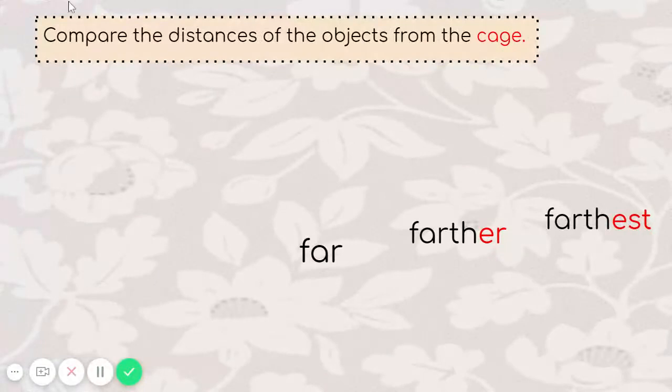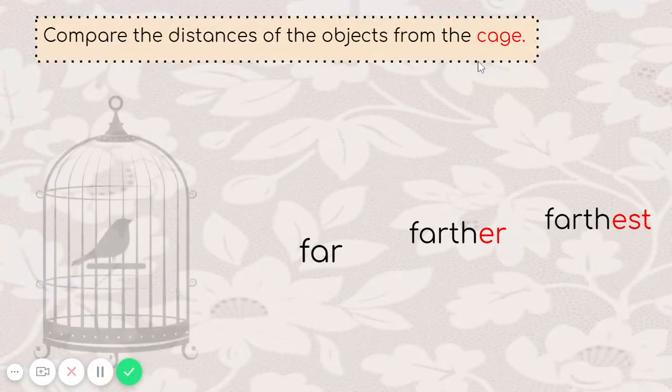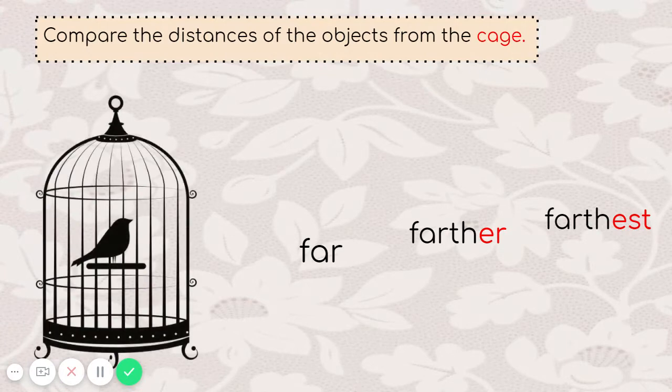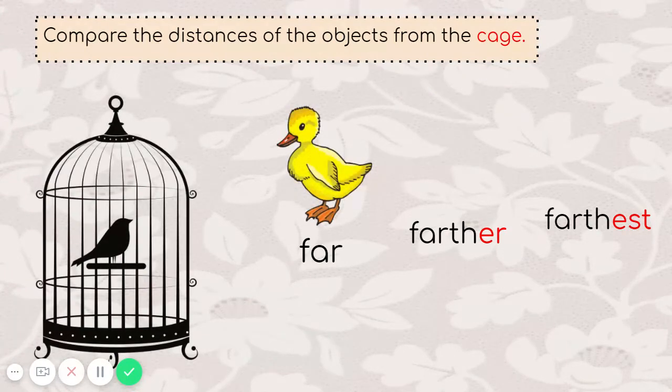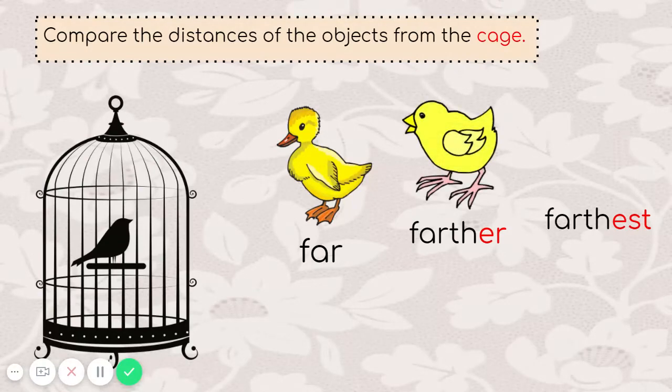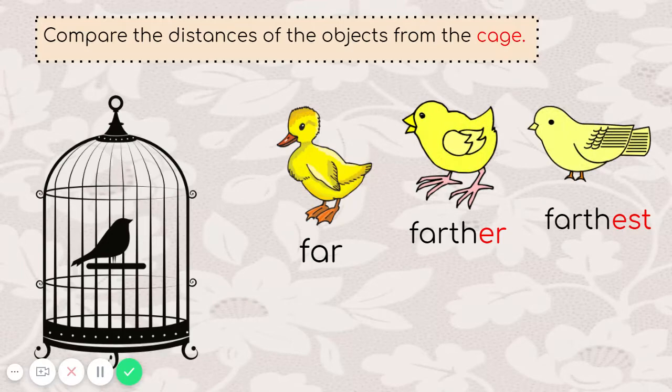Let's compare the distances of the objects from the cage. Where's the cage? Here's the cage. The duckling is far from the cage. The chick is farther from the cage. And the bird is farthest from the cage.